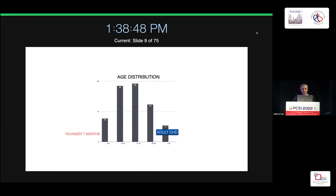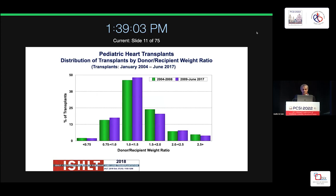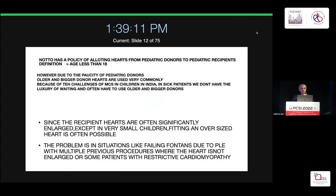Majority of donors in North America are children, but here we have to take older donors because of sheer necessity. The majority of diagnoses are DCM, with a few restrictive cardiomyopathies and a quarter being congenital heart disease. Donor-to-recipient weight ratio is very important — majority are 1 to 1.5 and less than 2. The policy is to allot hearts from pediatric donors to pediatric recipients, defined as under 18.